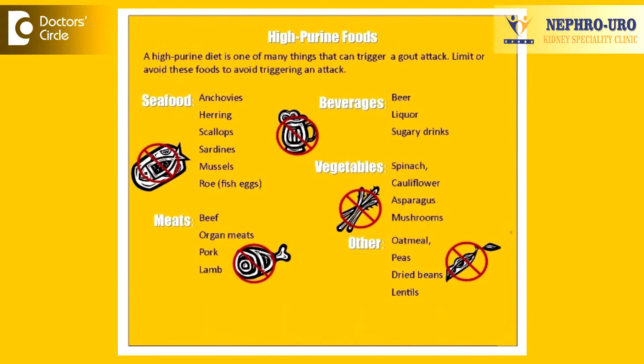To decrease the uric acid content, the best therapy is to drink a lot of fluids and decrease uric acid-containing foods. There are some pulses, fruits, and vegetables that contain high uric acid content and should be reduced. The best way of controlling uric acid is to drink a lot of water to increase dilution, leading to less uric acid and less stone formation.